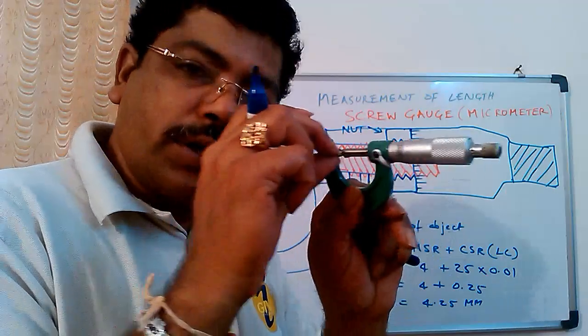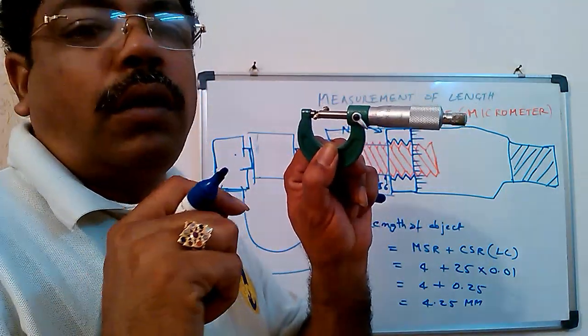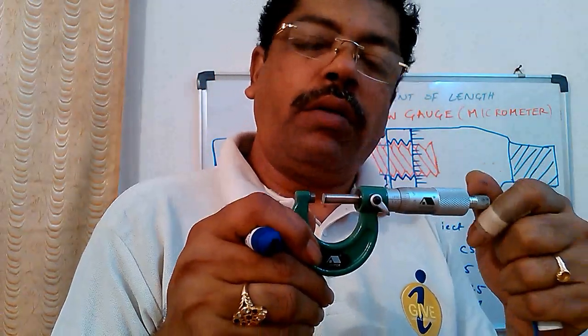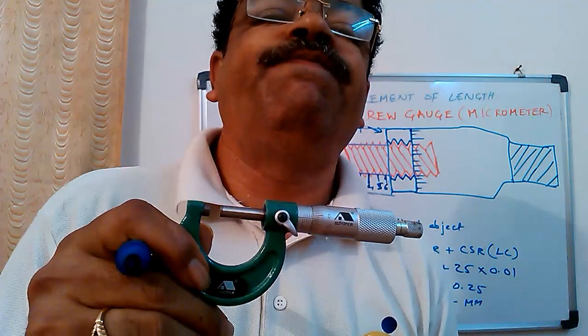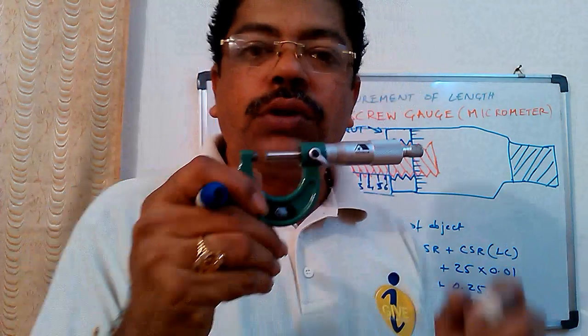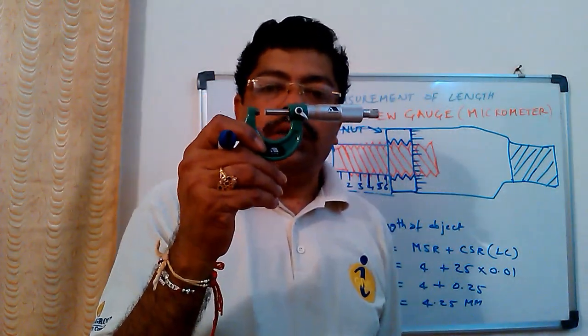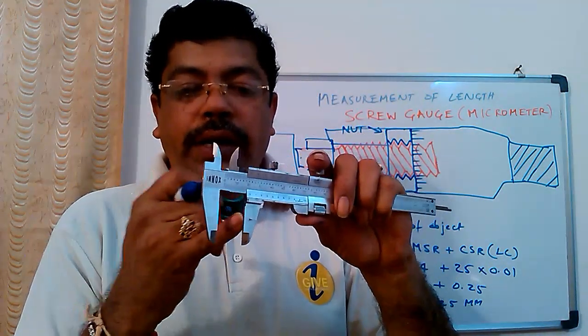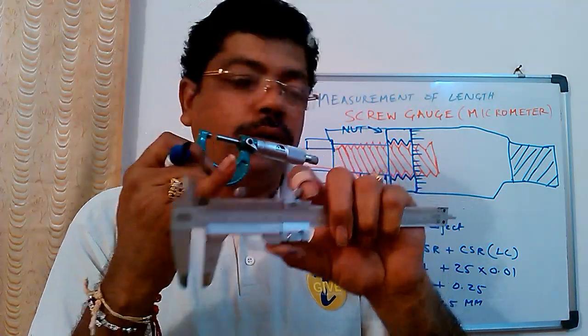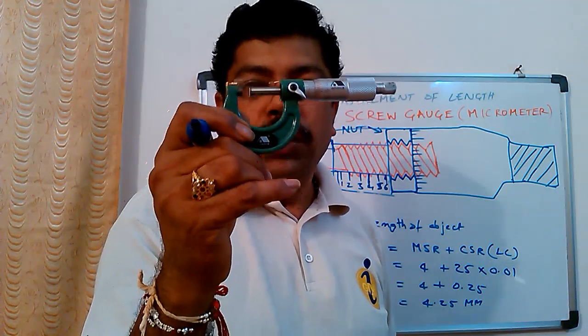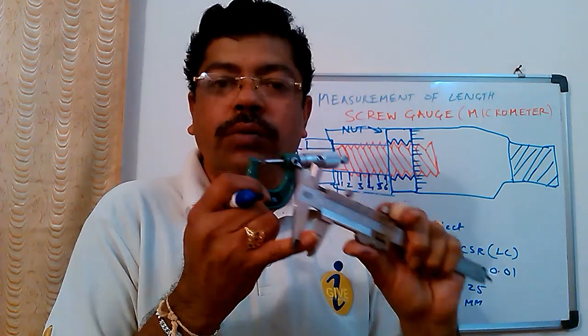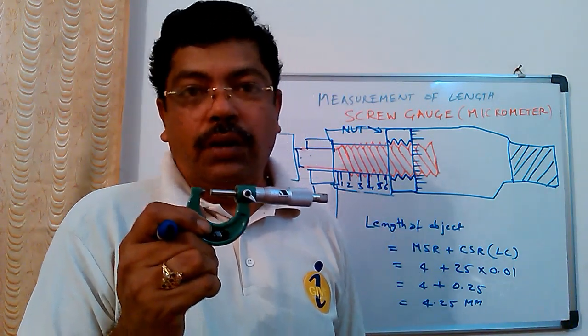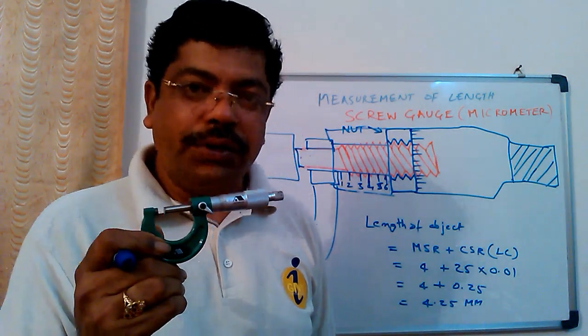Like this you can measure any object's length. There are other various varieties of screw gauges available in the market. There are some limitations for this screw gauge - in case of vernier we can measure externally, internally, and depth also. But using this you can only measure the external diameter of the objects. So there are screw gauges available in different shapes that can also measure internal diameters. Hope you enjoyed the thing. Thank you and see you for the next lesson.